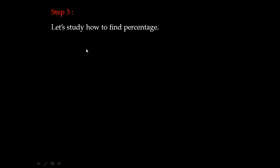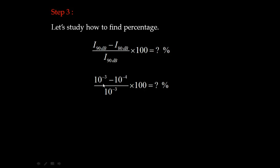Now let's find the percentage decrease. We subtract the 80 dB intensity from the 90 dB intensity, divide by the 90 dB intensity, and multiply by 100. That gives: (10⁻³ − 10⁻⁴) / 10⁻³ × 100, which equals 90 percent.